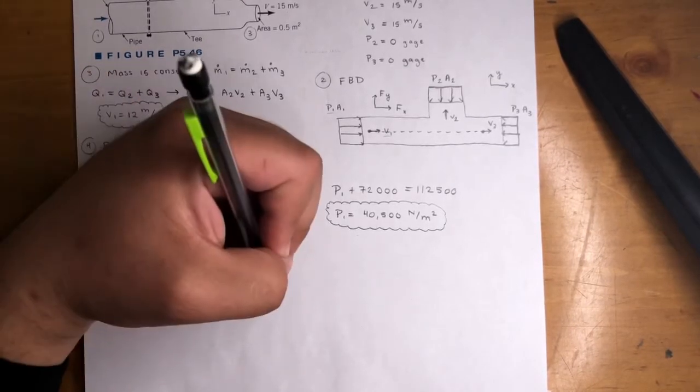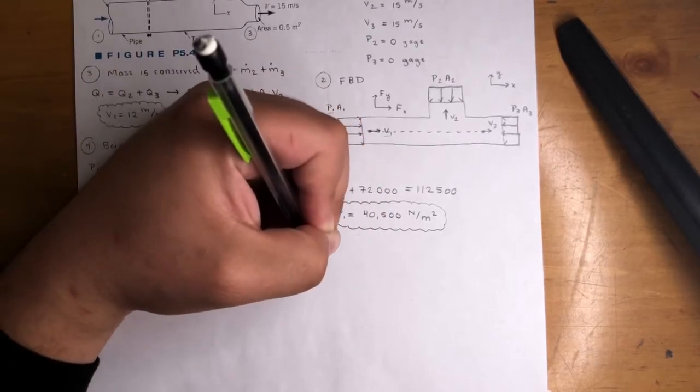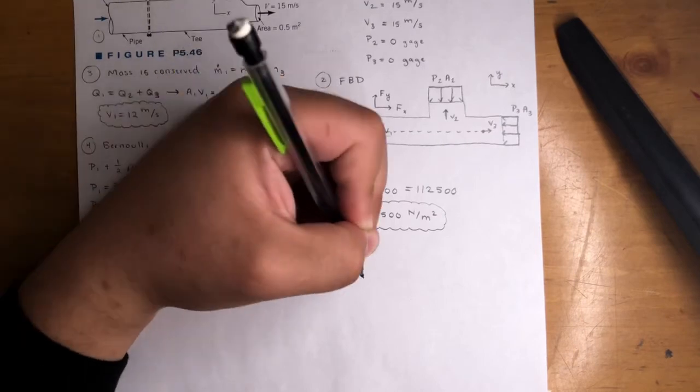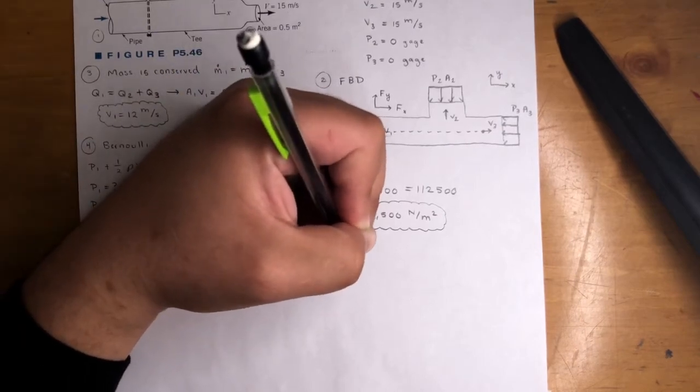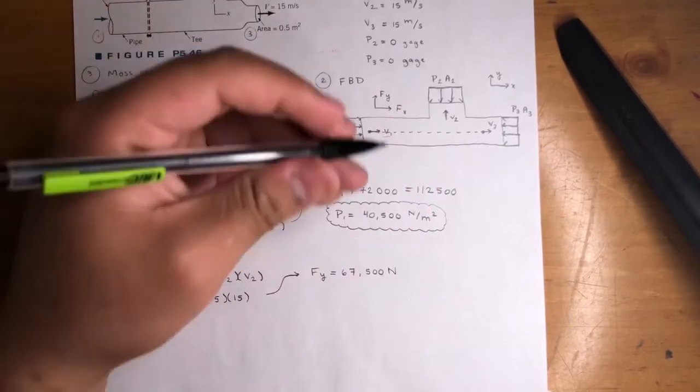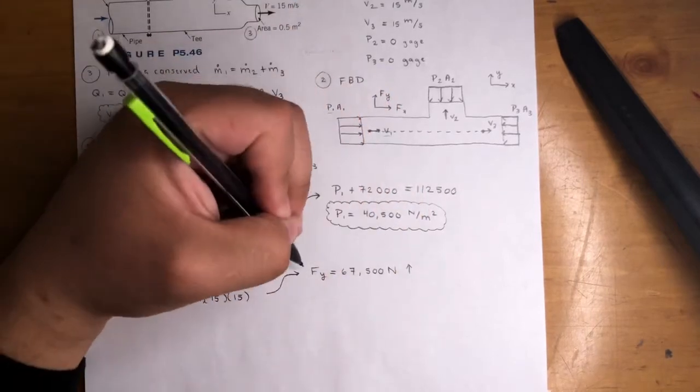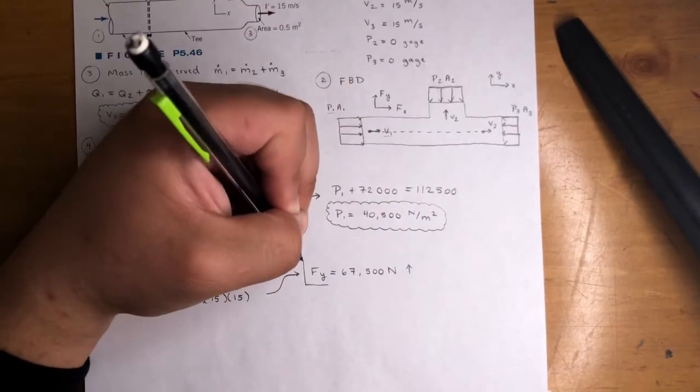P2 is 0, so this cancels out. We're left with Fy equals 1,000 times area of 2 is 0.3 times V2 which is 15 meters per second, 15 meters per second. Do the math, you will get Fy equals 67,500 Newtons and positive. That means we assumed correctly, it's going up. That is the first part of the answer.